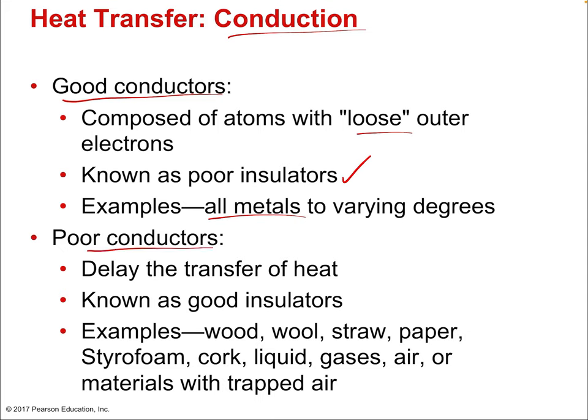Poor conductors delay the transfer of heat — they are insulators. Examples include wood, wool, straw, paper — things that have lots of pockets of trapped air, because gases are very bad conductors. If a material has lots of pockets of trapped gas, that makes it a good insulator. Styrofoam, cork, any material with lots of trapped air falls into this category.